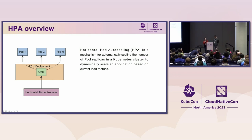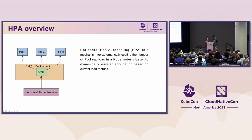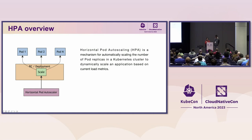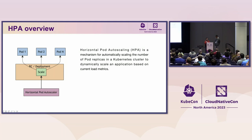I'm assuming that everyone is familiar with HPA, but let me refresh. HPA, the horizontal pod autoscaling, is a mechanism for automatically scaling the number of pod replicas in a Kubernetes cluster, so that it dynamically scales an application based on current metrics. During each time period, the HPA controller manager queries resource utilization based on the metrics specified in each HPA definition. The controller manager identifies the target resources defined by the scale target reference, and selects the pods based on spec selector labels from the target resource.